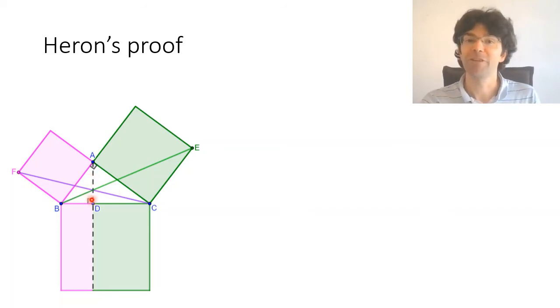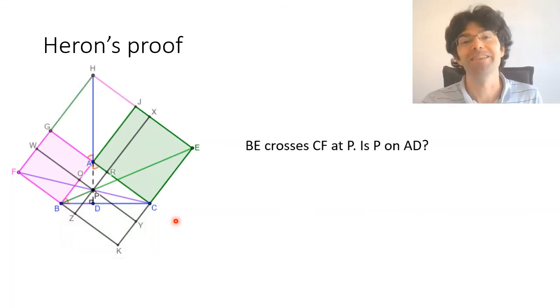So we're looking for complementary parallelograms but here we've got the special case where we've got all sorts of right angles so the parallelograms are rectangles. Now we're going to say that P is the point where BE and CF intersect and then we're going to try and show that P also lies on the line AD.